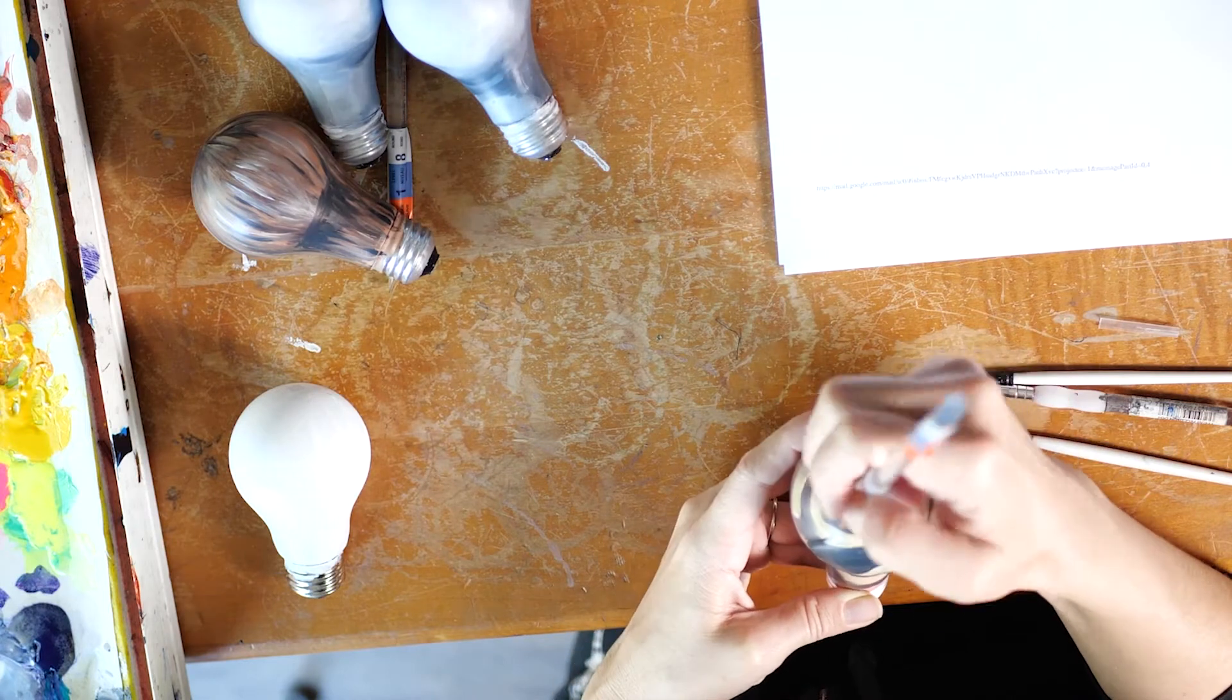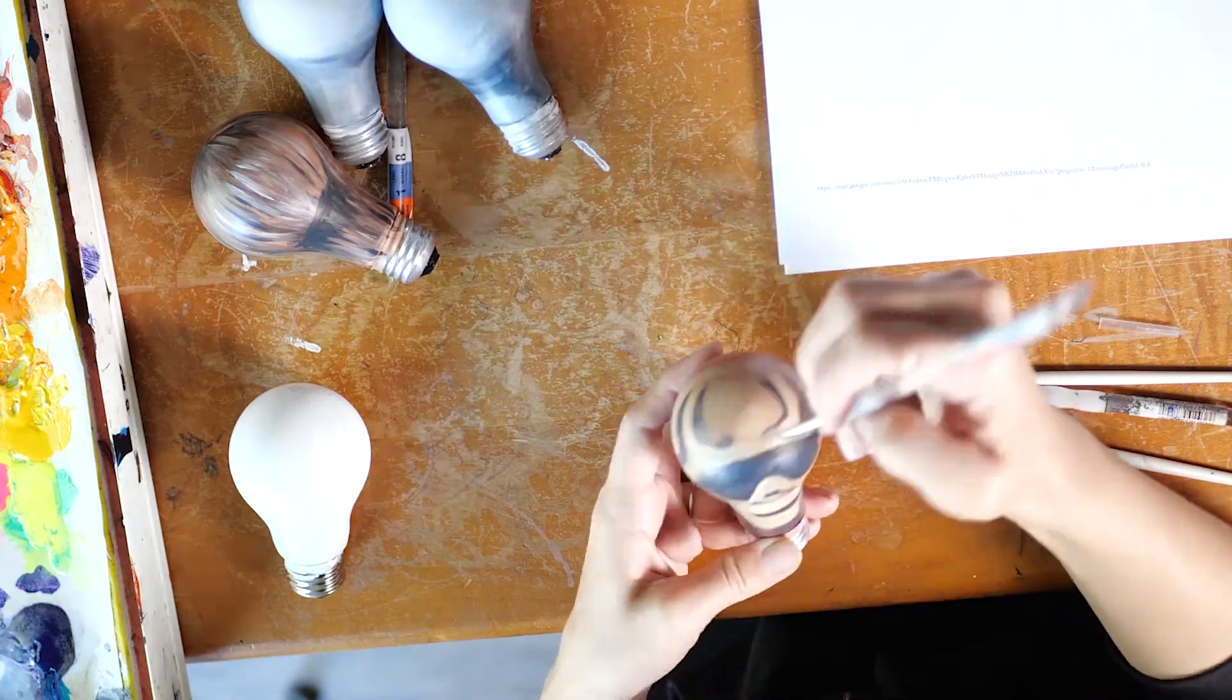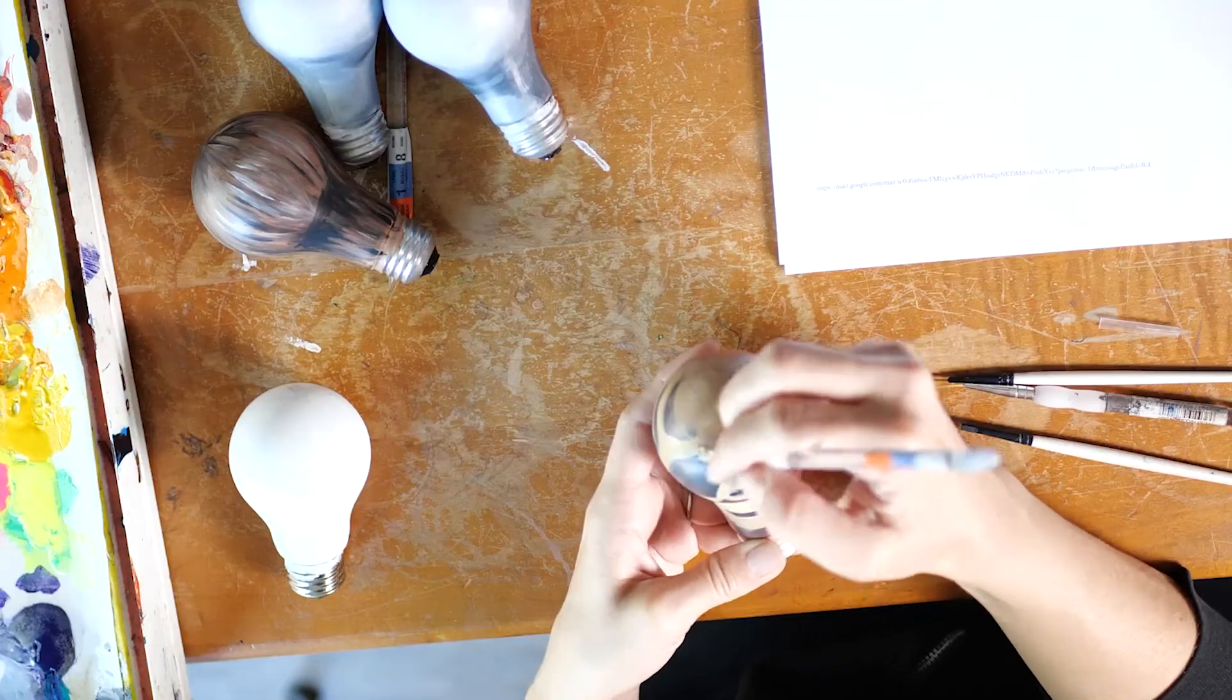Now I'm taking some more of that lighter tan yellow color and I'm bringing back some of these highlights and I'm just kind of blending them in while the paint's still wet.